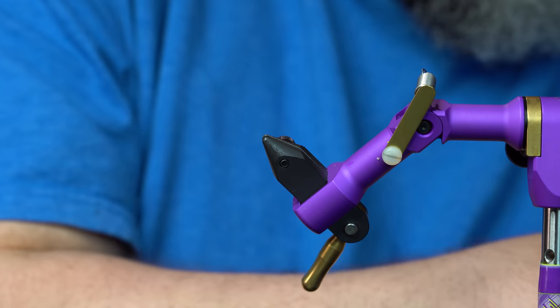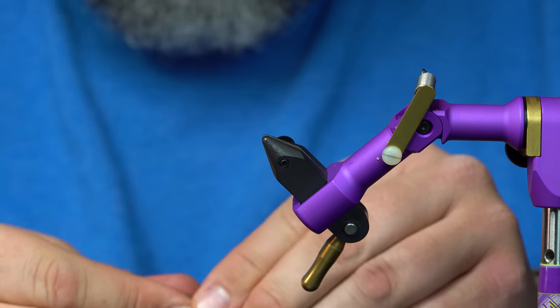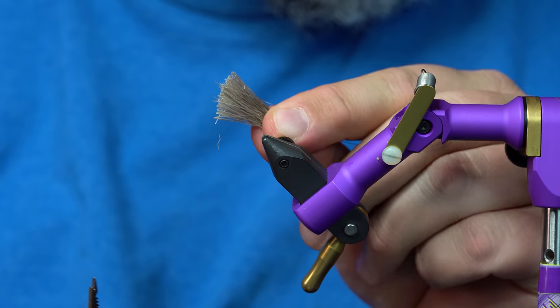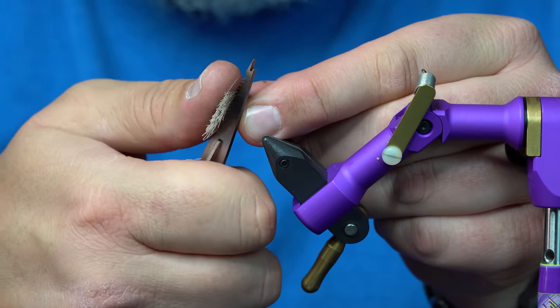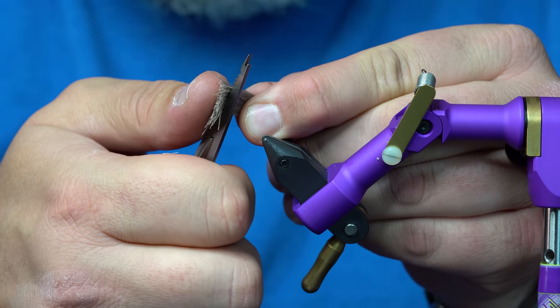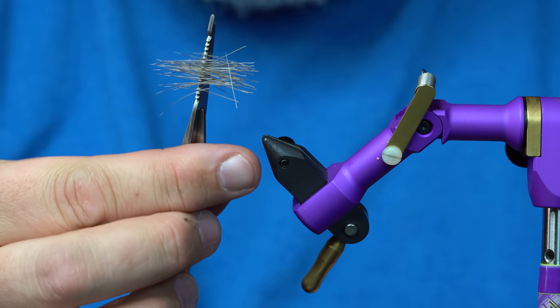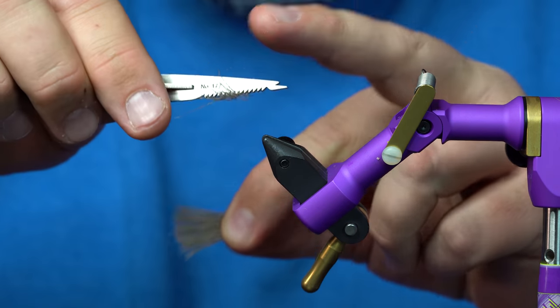I'm going to take some deer hair, about the amount that I'd use on a size 14 elk hair caddis or something like that. It's got a bunch of underfluff in it. If I just take this and run it between the comb and my finger and pull, it's going to pull out all those broken fibers and a bunch of underfluff. It's really easy to get that out of the comb, you just tap it, falls out.